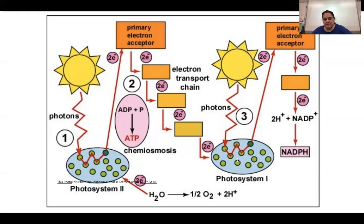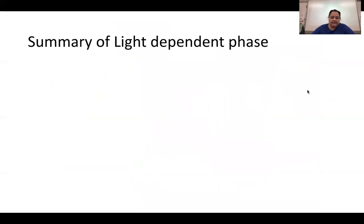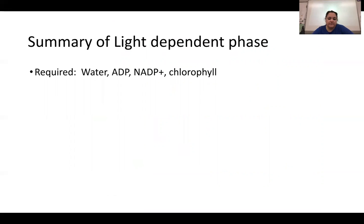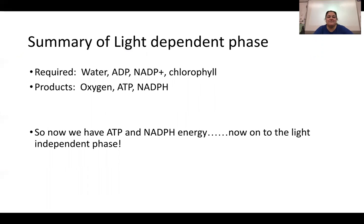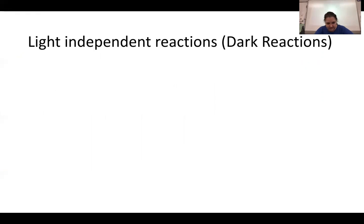Summary of stage one: the reactants required are water, ADP, NADP+, and chlorophyll — chlorophyll absorbs the light into the thylakoid. The products are oxygen (a byproduct), ATP, and NADPH. Glucose is not made yet, but we now have the energy — ATP and NADPH — to make glucose in stage two, the light-independent Calvin cycle.